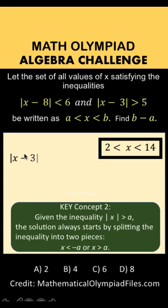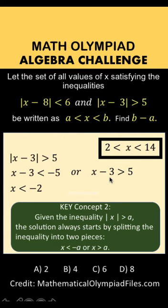Applying this concept to |x - 3| > 5, where a is 5, we get x - 3 < -5 or x - 3 > 5. Adding 3 to both sides of each inequality gives us x < -2 or x > 8. Take note that the connector here is the word 'or'.